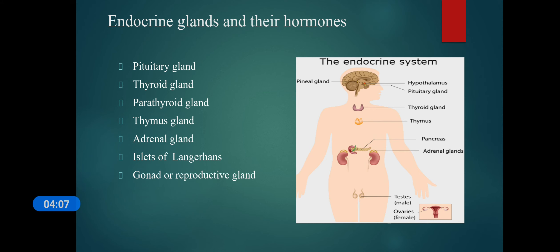First is the pituitary gland, located just below the hypothalamus of our brain. The pituitary gland is called the master of all glands — or king of all glands. It is the smallest gland in our body, but the things it controls are enormous. The hormones it produces affect growth and reproduction, and it can also control the function of other endocrine glands like the thyroid and parathyroid.